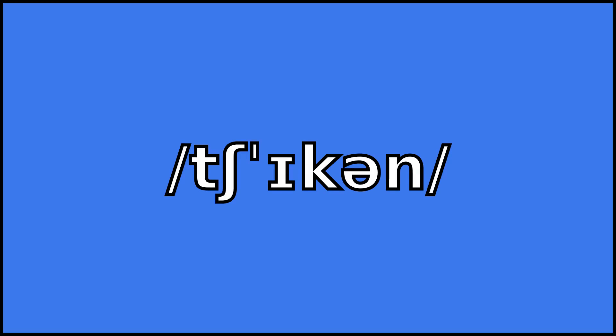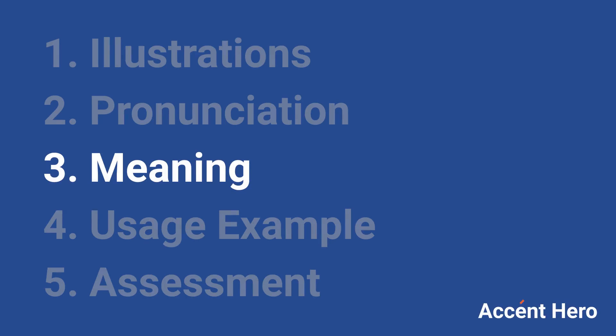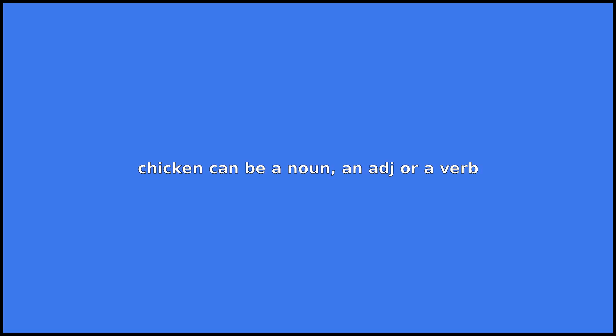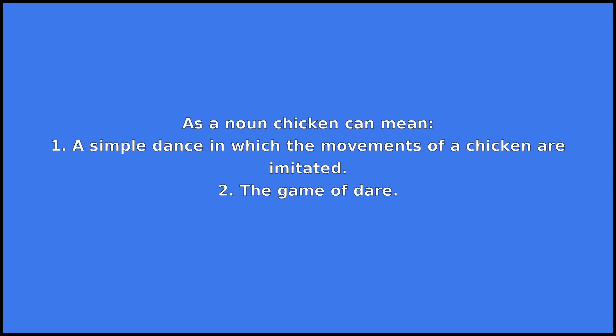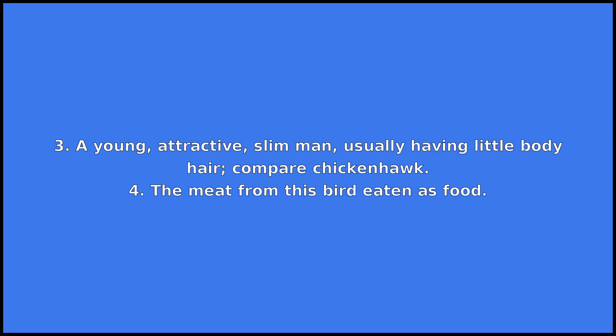Chicken can be a noun, an adjective, or a verb. As a noun, chicken can mean: 1. a simple dance in which the movements of a chicken are imitated. 2. the game of dare. 3. a young, attractive, slim man, usually having little body hair — compare chicken hawk.